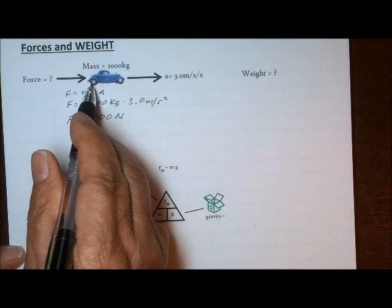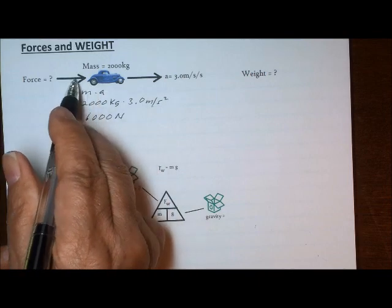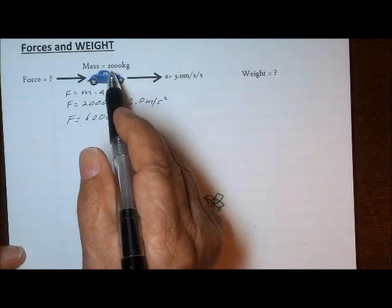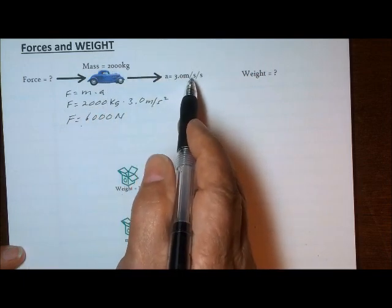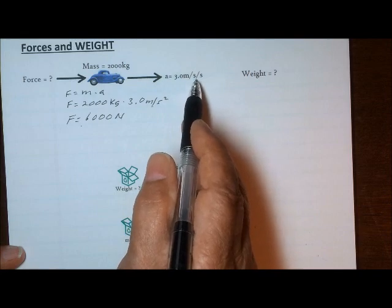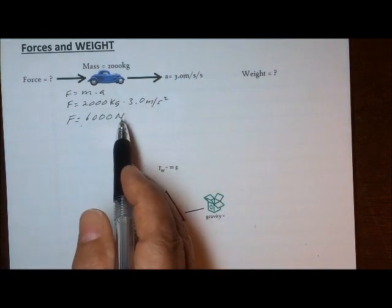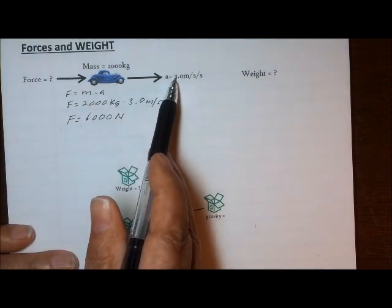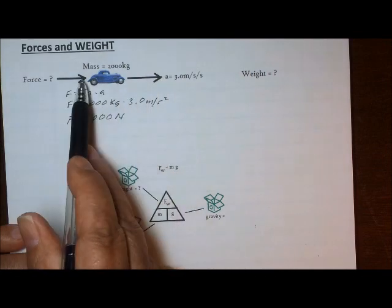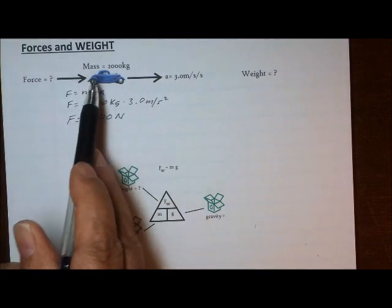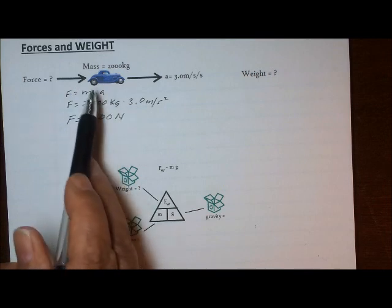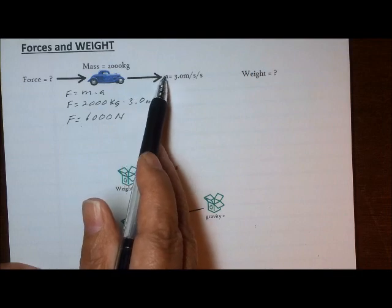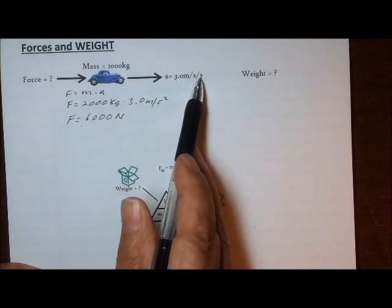The force the tires apply to the road — pushing the car forward to the right — causes that 2,000 kilogram mass to accelerate at 3.0 meters per second squared, giving 6,000 Newtons. Whatever the acceleration's direction is, that is also the direction of the net force. So the net force, 6,000 Newtons, acts from left to right on this car, causing a positive acceleration of 3 meters per second squared.